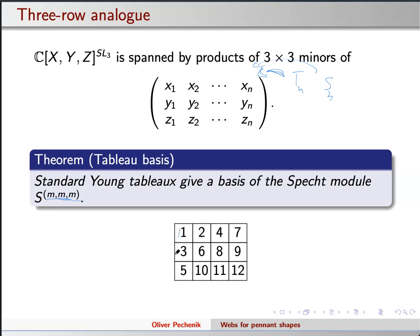Standard monomial theory again gives me a basis for the space: standard Young tableaux that are three-row rectangles. For example, with n=12, a tableau says: take columns 1, 3, 5 of the matrix — there's a 3-by-3 minor; columns 2, 6, 10 — another 3-by-3 minor; columns 4, 8, 11; columns 7, 9, 12. These four 3-by-3 minors are disjoint in terms of columns, and I multiply them together for some explicit polynomial. The action of SN is easy to understand: I'm just taking these numbers and feeding them into the permutation to get a new tableau, re-indexing the variables.